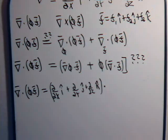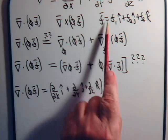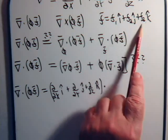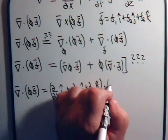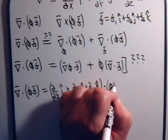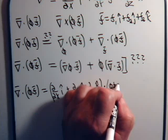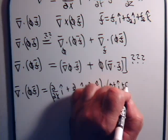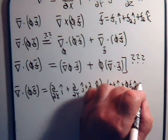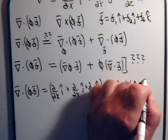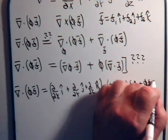So, phi times f is just going to be phi times this term and this term and this term so we're going to have phi f1 i plus phi f2 j plus phi f3 times k